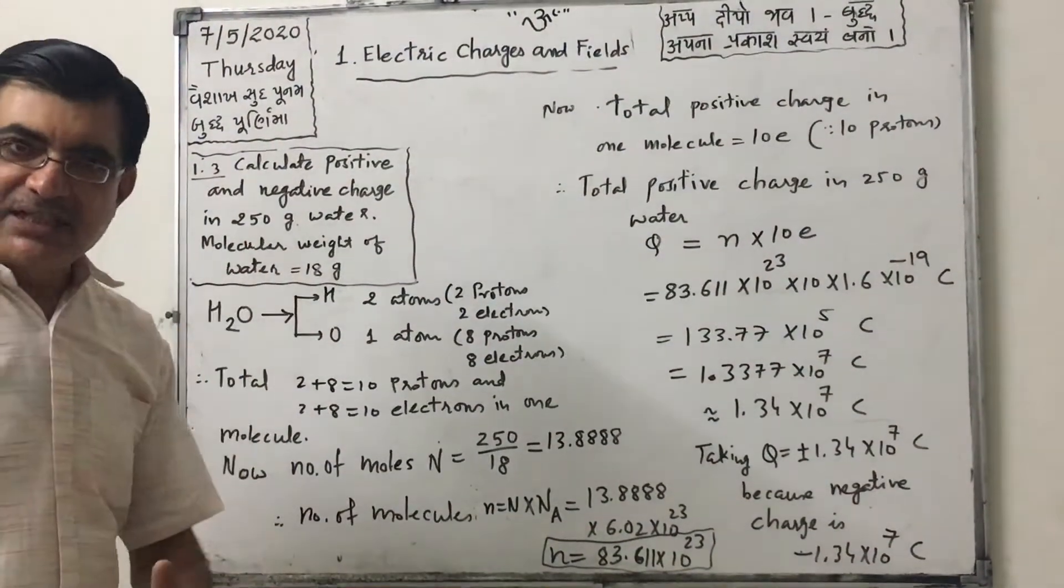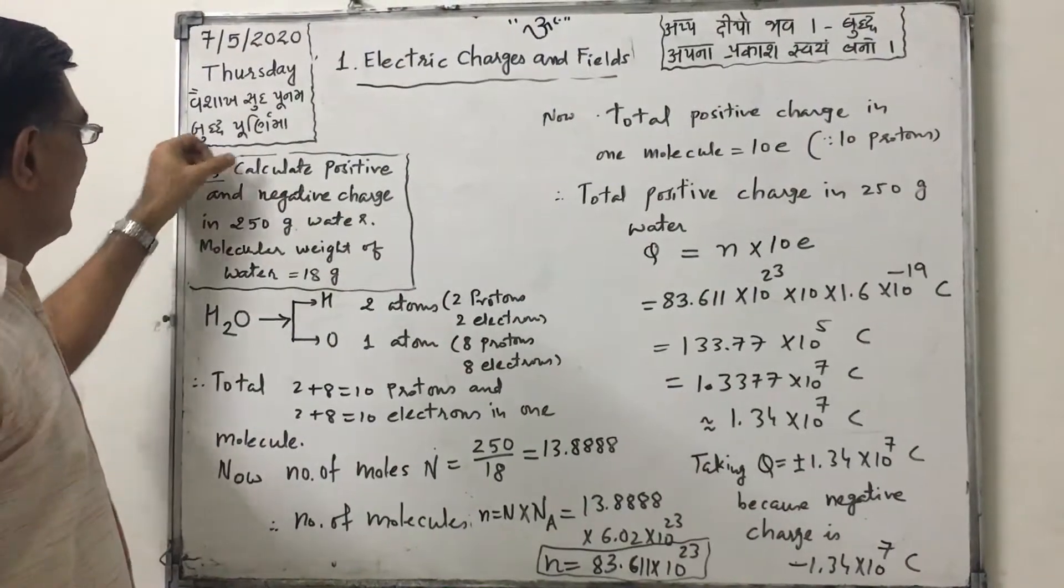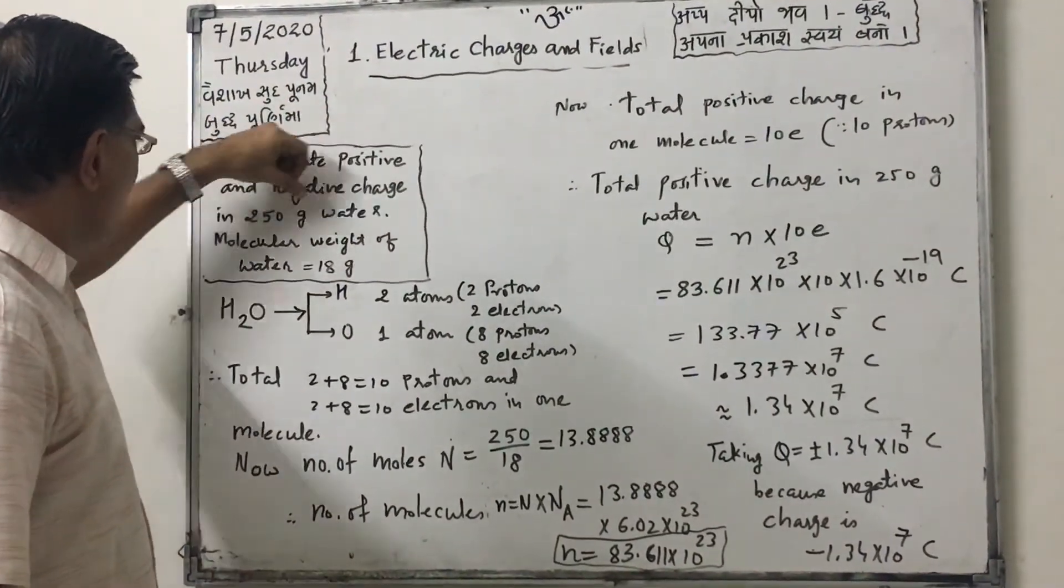According to NCERT textbook, solve example 1.3. The data is calculate positive and negative charge in 250 gram water.